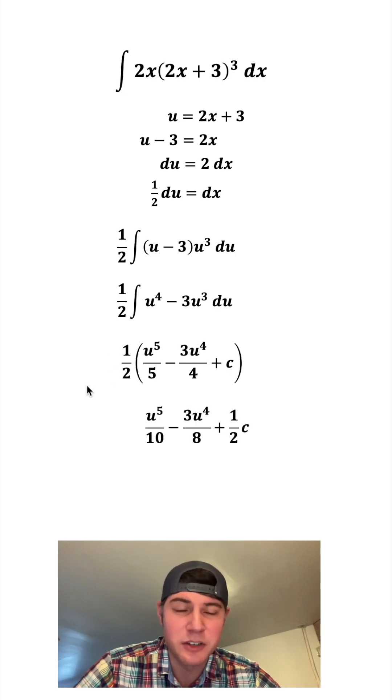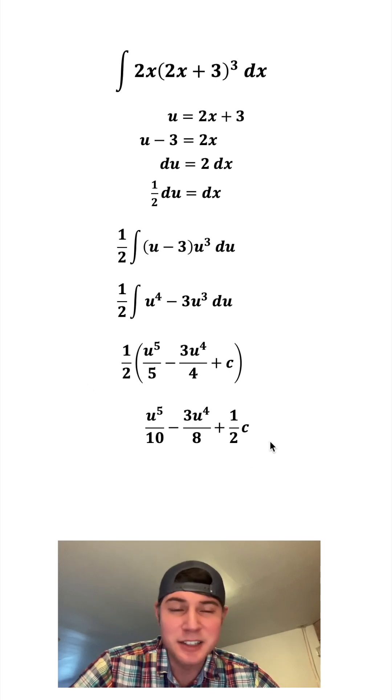We can distribute this 1 half, which gives us u to the 5th over 10 minus 3u to the 4th over 8 plus 1 half c. And c just stands for constant, so 1 half c is the same thing as just c.